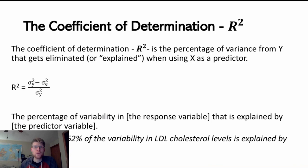That's where this term coefficient of determination comes in, or more commonly, we just know it as R-squared. That's what we're really going to call it from now on. It's the percentage of variance from Y that gets eliminated or explained when using X as a predictor.